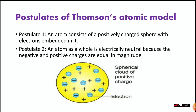Next are the postulates of Thomson's model. The first postulate states that an atom consists of a positively charged sphere with electrons embedded in it. Basically, there is a big sphere which is positive, and in some areas, negative electrons are kept inside it.